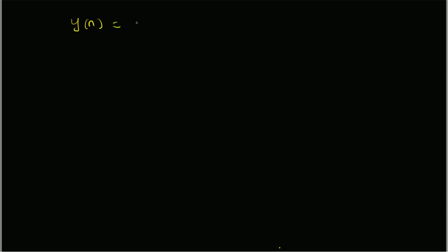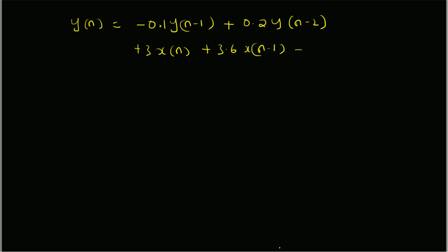Hello, welcome. In this short video, let us look at an example illustrating the Direct Form 2 realization of an infinite impulse response system. It is given a system equation: y(n) = -0.1·y(n-1) + 0.2·y(n-2) + 3·x(n) + 3.6·x(n-1) + 0.6·x(n-2). Given this system equation, we want to build the Direct Form 2 realization — that is the goal.